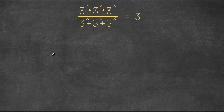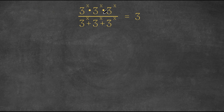Hi guys, welcome back to Click Academics. In today's video, I'm going to teach you how to solve this exponential equation. We have 3 to the power of x times 3 to the power of x times 3 to the power of x, divided by 3 to the power of x plus 3 to the power of x plus 3 to the power of x, and this is all equal to 3.